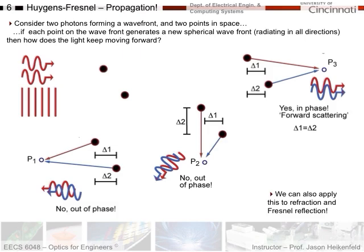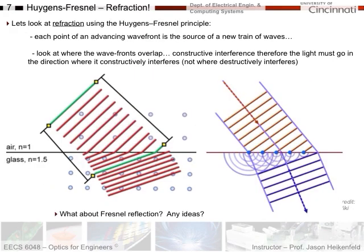This is going to be very important for understanding diffraction — the idea that every point in space allows energy to re-radiate in any direction because there's nothing to confine that energy. Let's apply this also to refraction and Fresnel reflection. We saw previously that by interference principles, light has to refract because the wavelength — the spacing between peaks and troughs — decreases in the higher refractive index medium. For everything to stay in phase, the light has to bend because part of the wave enters the material first.